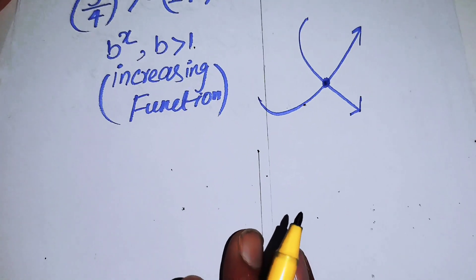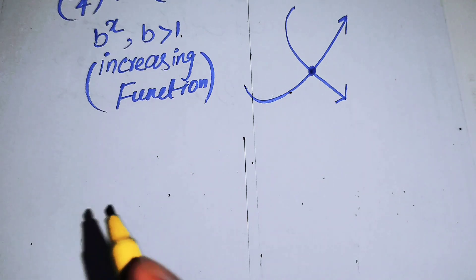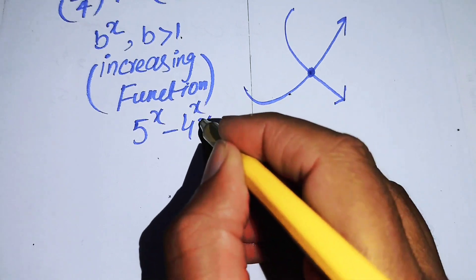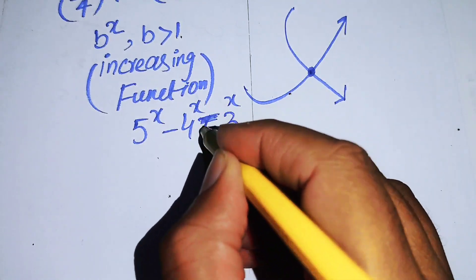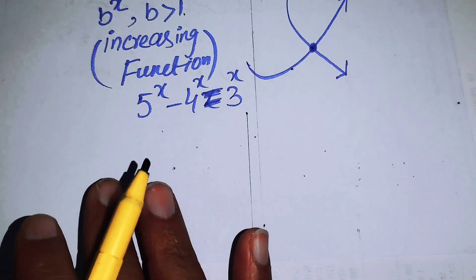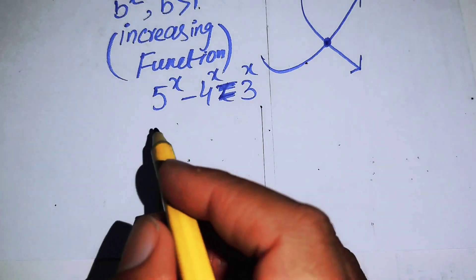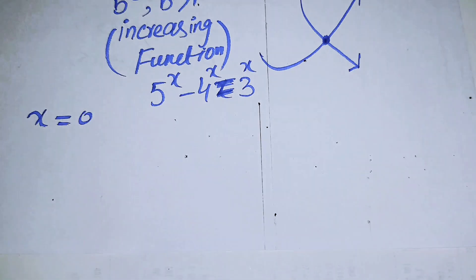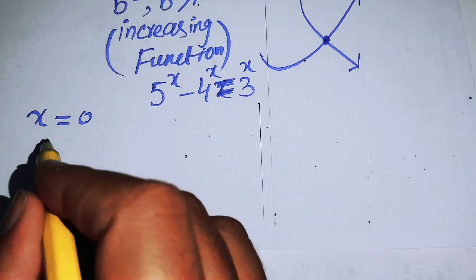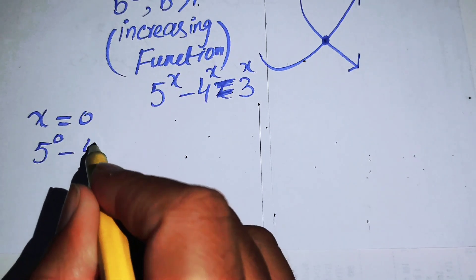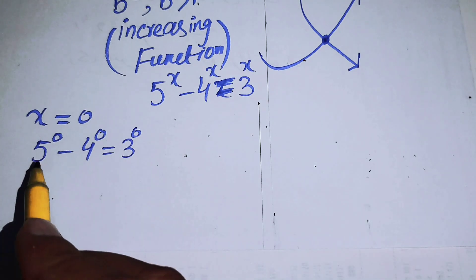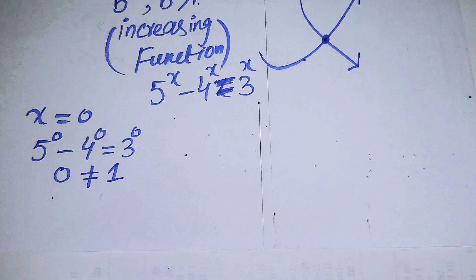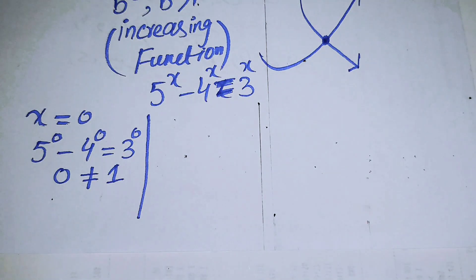To find this point we use inspection. Our equation is 5^X minus 4^X equals 3^X. First, we try X equals 0: 5^0 minus 4^0 equals 3^0 gives 1 minus 1 equals 1, which is 0 equals 1. That is not possible, so we reject X equals 0.